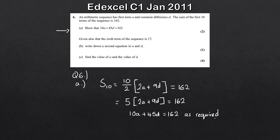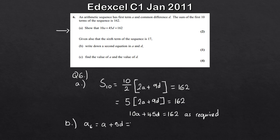For part B, we're told that the sixth term of the sequence is 70, and we're asked to write down a second equation in A and D - just a nice easy one mark. We use the nth term formula: A6 equals A plus (N minus 1)D, where N is 6, giving us A plus 5D. We know that equals 70, so our second equation is A plus 5D equals 70.